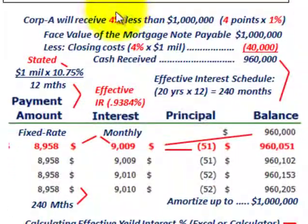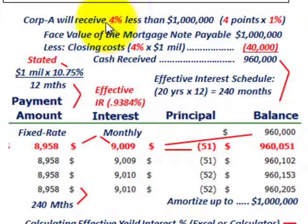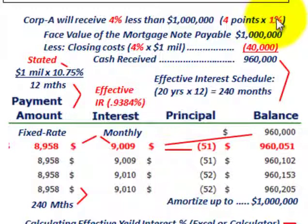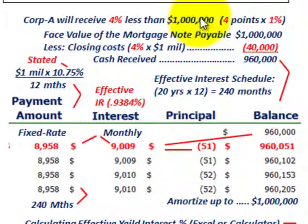Now let's look at how we handle this mortgage notes payable — how to record it, calculate interest, determine how much the corporation is borrowing, and how they'll pay it back. Corporation A will receive 4% less than the $1 million they're borrowing because the bank is charging four points. A point represents 1% of the loan, so four points times 1% gives us a 4% reduction — that's the initial financing cost on this note.